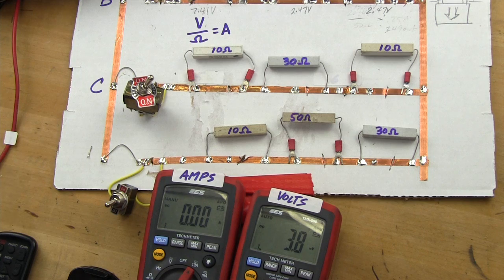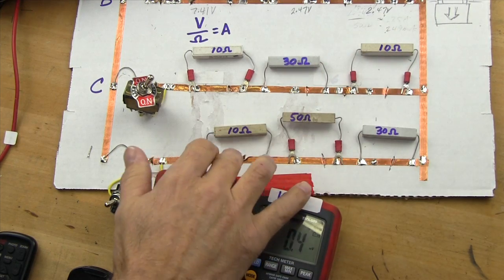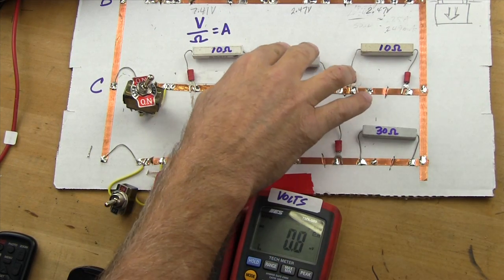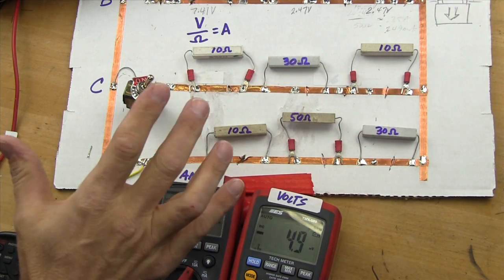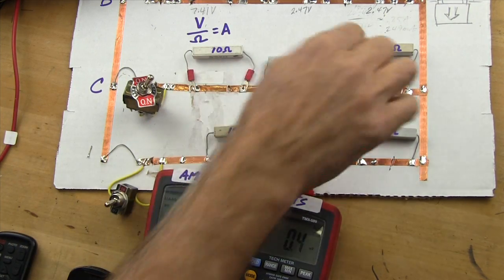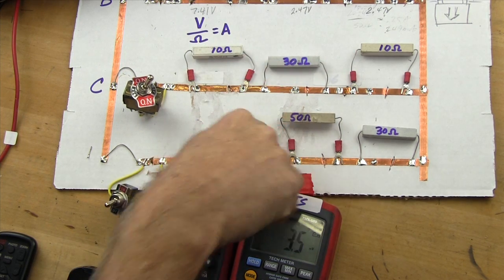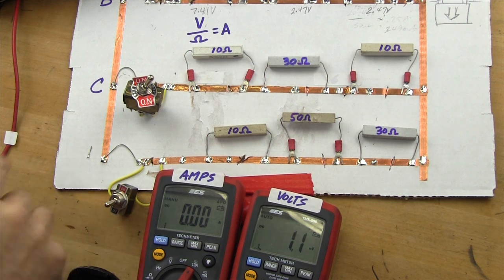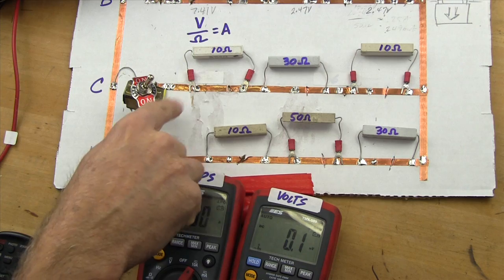Now, if you teach this, teaching the math for series is easy because it's 10 plus 30 plus 10 is 50, 10 plus 50 plus 30 is 90. So we already know we've got 50 ohms here and 90 ohms there. Adding those up is easy. Figuring out the resistance when we have this in parallel with this is a little harder, but I'm going to show you how to do that simply with the calculator and the inverse button.